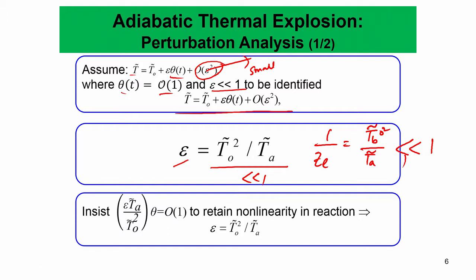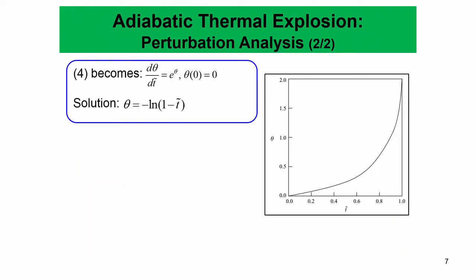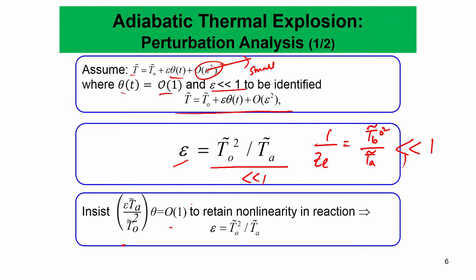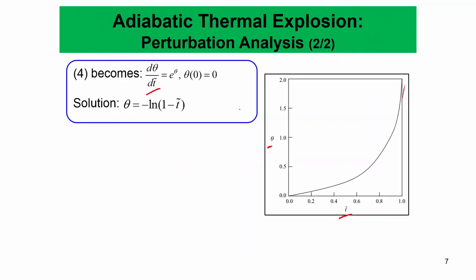To retain the non-linearity, when we substitute the perturbation into the equation, we get the simplified result: dθ/dt̃ = e^θ. We can then plot θ with respect to t̃ and obtain exponential behavior. The solution is θ = −ln(1 − t̃), which gives this behavior. When t̃ becomes equal to 1, θ becomes infinity — that is when t equals the ignition time t_i.